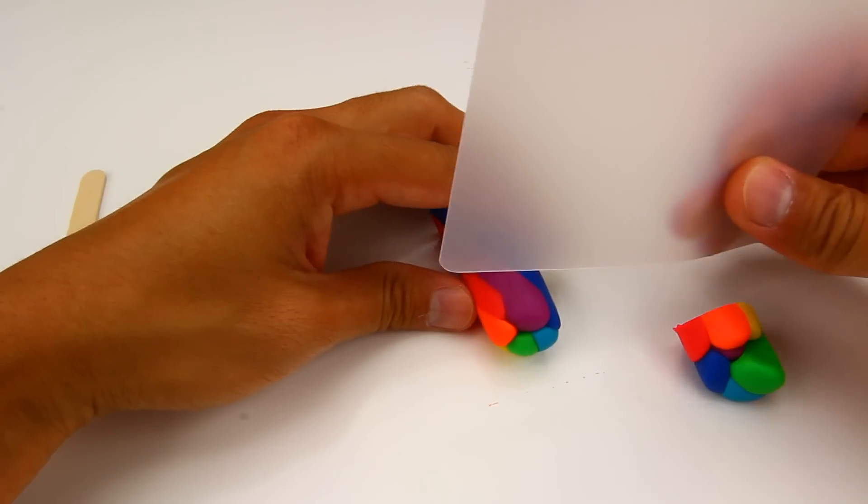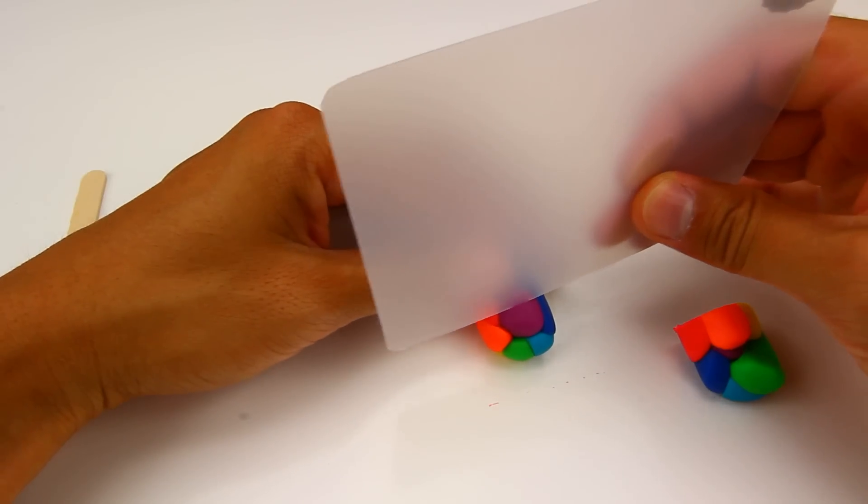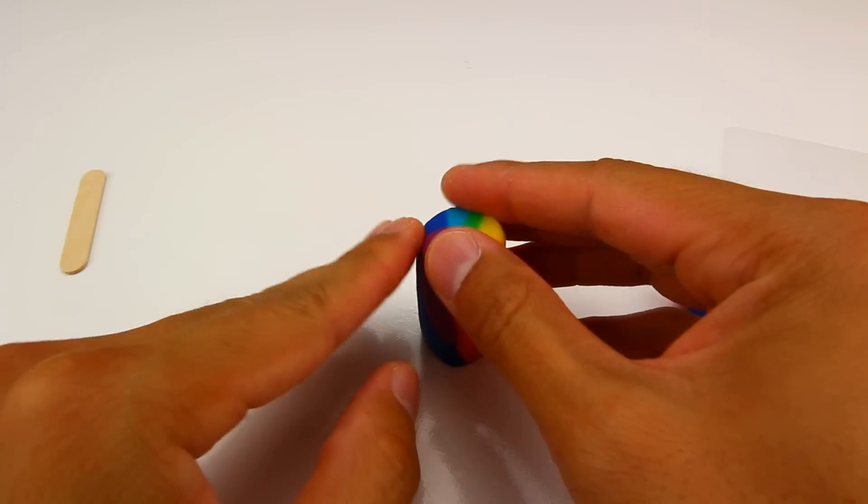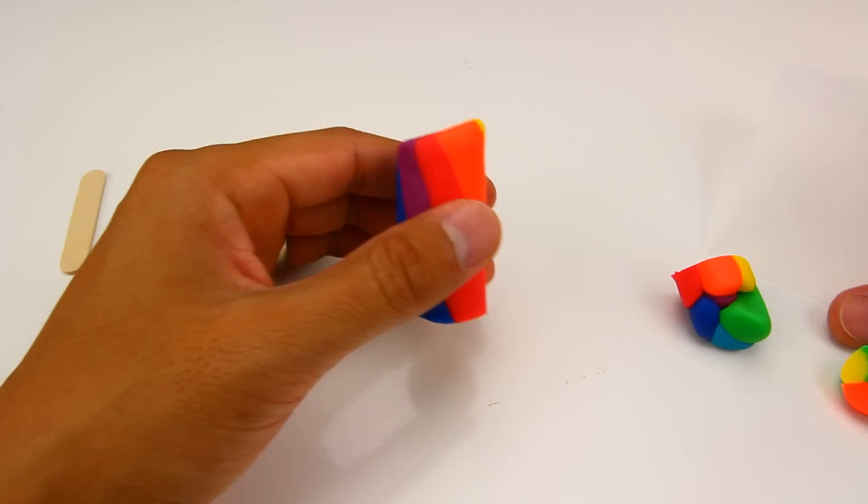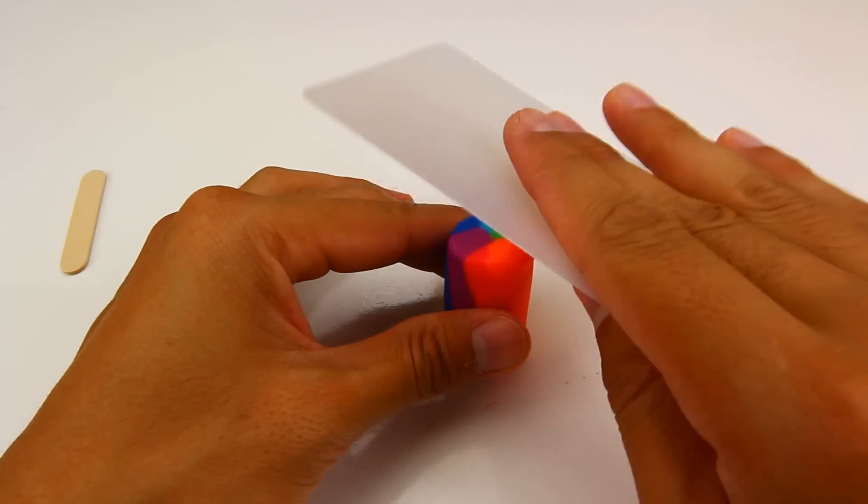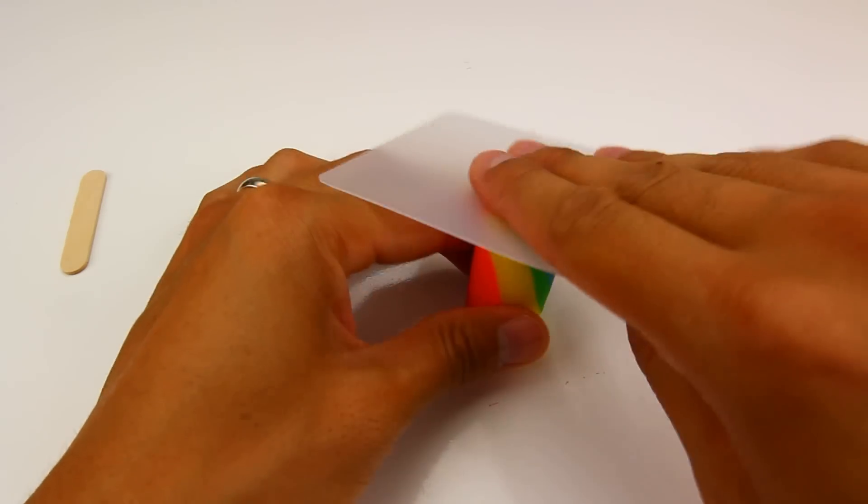Then I'm just gonna cut here too so it's more even. I'm just gonna shape now the top. Looks like the top of a popsicle.